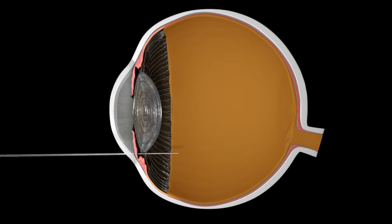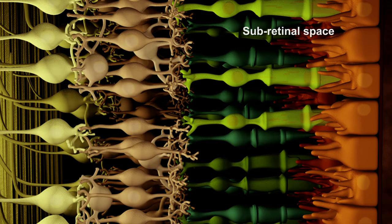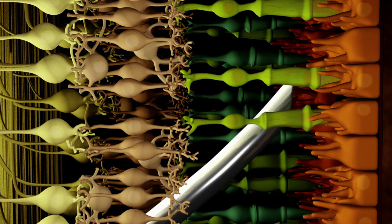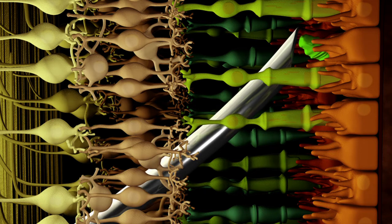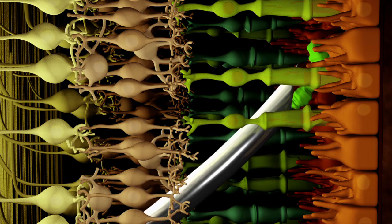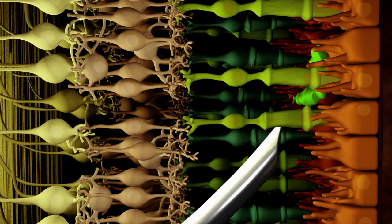Transplanting the new photoreceptors is no easy task. Cells are injected in the sub-retinal space between the pigmented and non-pigmented layers of the retina. But barriers often prevent them from migrating into the damaged areas.